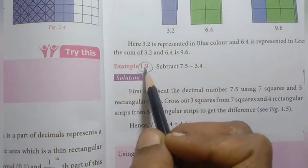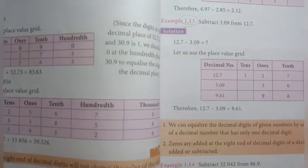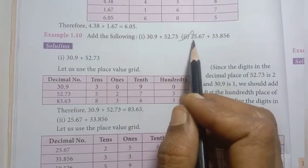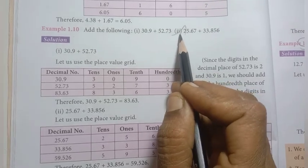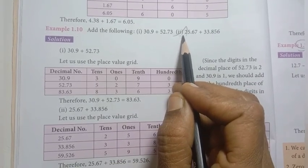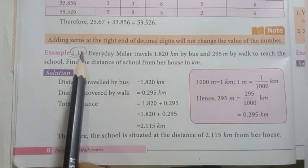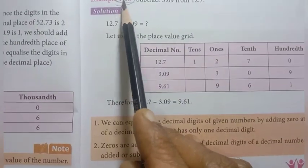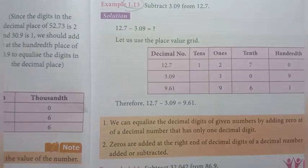This is important. Then example 1.9 — that is subtraction. Page number 8, example 1.10, second one: 25.67 plus 33.856 — this is a previous year 3rd midterm question. Subtract 3.09 from 12.7 — this is an important question.